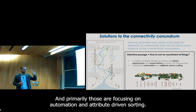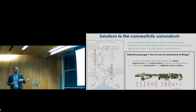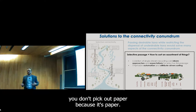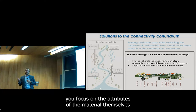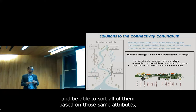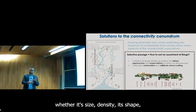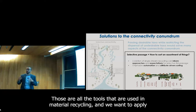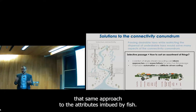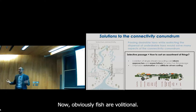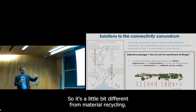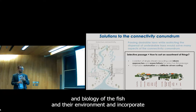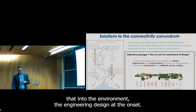It's really the evolution from the single stream recycling process that informs approaches and expectations we can apply to fish passage — primarily focusing on automation and attribute-driven sorting. In the material recycling industry, you don't pick out paper because it's paper or metal because it's metal. You focus on the attributes of the material and sort all of them based on those same attributes — whether it's size, density, shape, whether it's magnetic, or coloration. We want to apply that same approach to the attributes of fish. Obviously fish are volitional — they can respond to their environment — so we have to focus on both the ecology and biology of the fish and their environment and incorporate that into the engineering design.